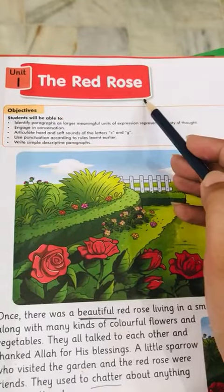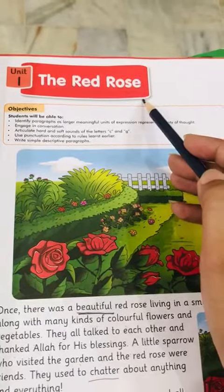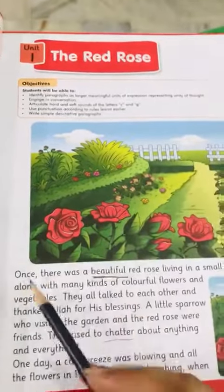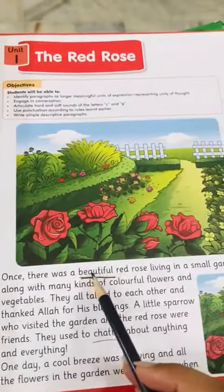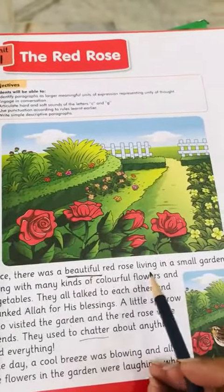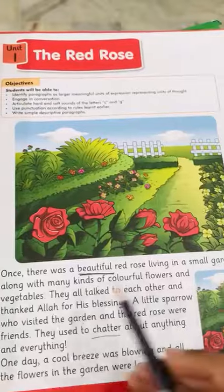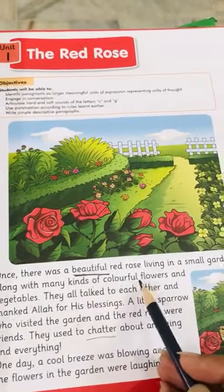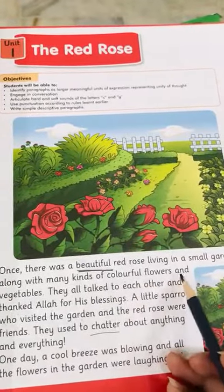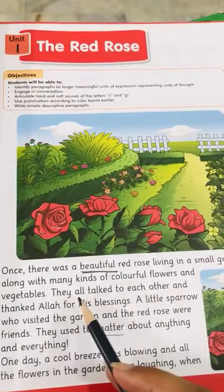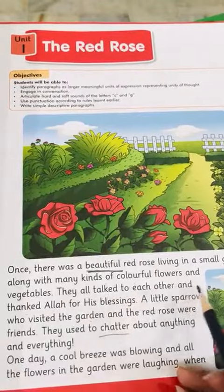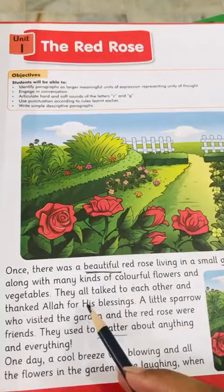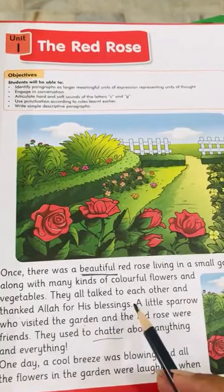Red rose means a kind of flower, a red flower. Once there was a beautiful red rose living in a small garden along with many kinds of colourful flowers and vegetables. They all talked to each other and thanked Allah for his blessing.